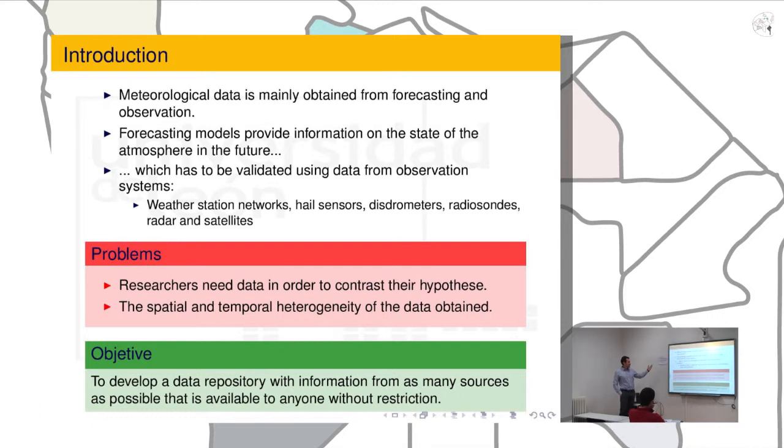I want to talk about two problems that usually meteorological researchers have to deal with. It's difficult to get that data that you need to validate or contrast your hypothesis. It's very difficult. You need to ask for data to manage a lot of models.